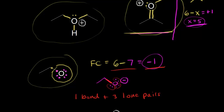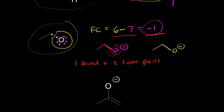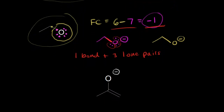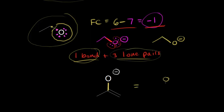We could leave those electrons off if we wanted — we could just say this is oxygen with a negative one formal charge and know that there must be three lone pairs of electrons on that oxygen. Let's look at one more example where the formal charge is negative one. This oxygen has a negative one formal charge and already has one bond to it, so the pattern of course is one bond plus three lone pairs of electrons. We could redraw this with three lone pairs of electrons on that oxygen with a negative one formal charge. Become familiar with these patterns.